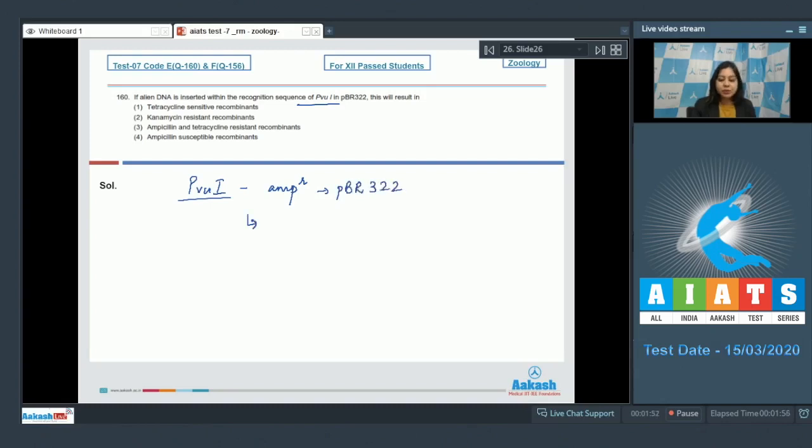Thus if an alien piece of DNA is inserted at this site, that is at PVU1, it will lead to insertional inactivation of ampicillin resistance gene.